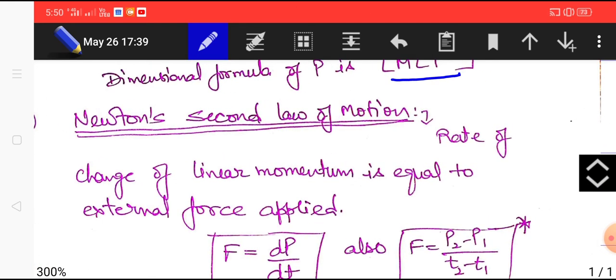So what is Newton's second law of motion? Newton's second law of motion in its brief and crisp state defined as rate of change of linear momentum is equal to external force applied. That's it.